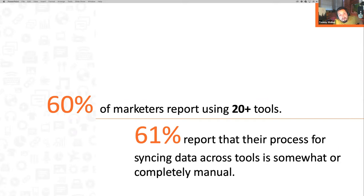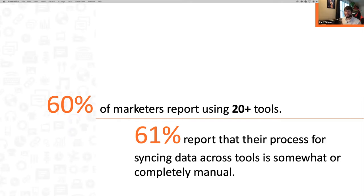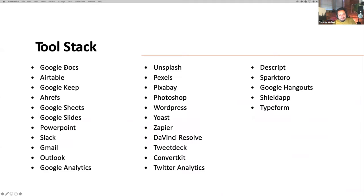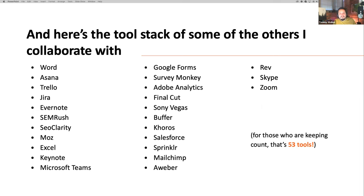When I first saw that, I said there's no way I'm using 20 tools. But when I took an inventory of the tools I use on a regular basis — Google Docs, Airtable, Keep, Ahrefs, Sheets, Slides — and then when I'm working with other people who use Word, Asana, Trello, or Jira, I have to be fluent in 53 different tools in my case and syncing information across all of them. It becomes very, very challenging.